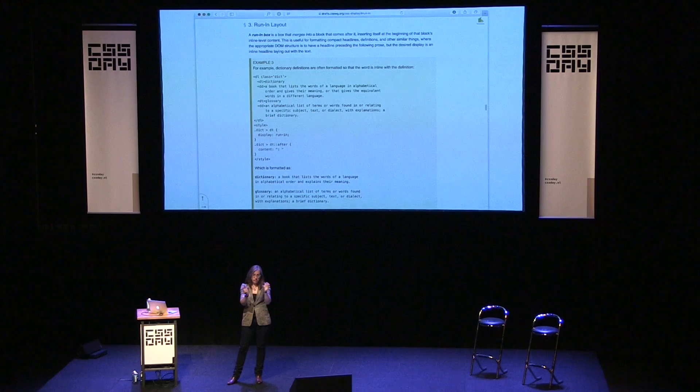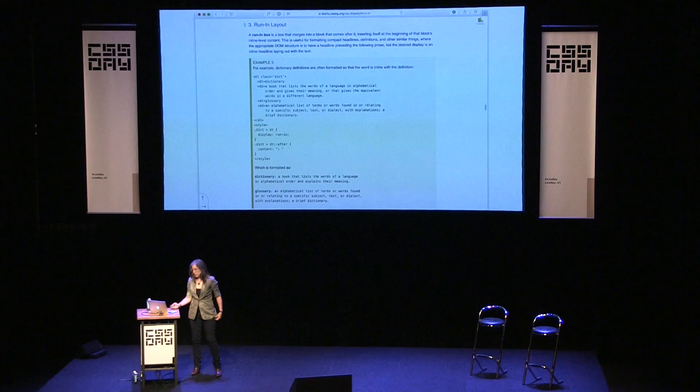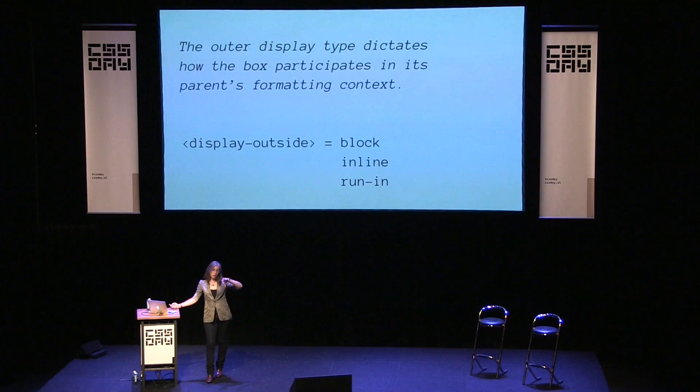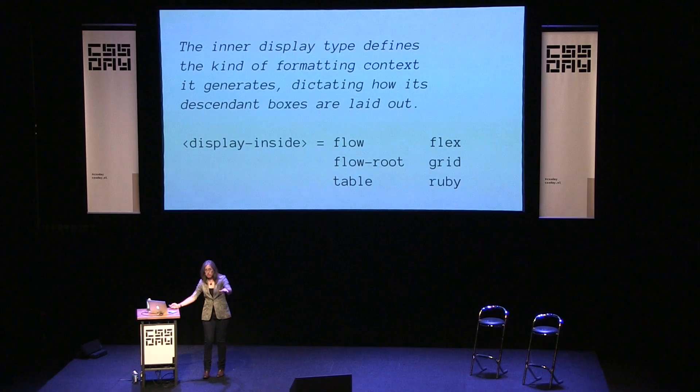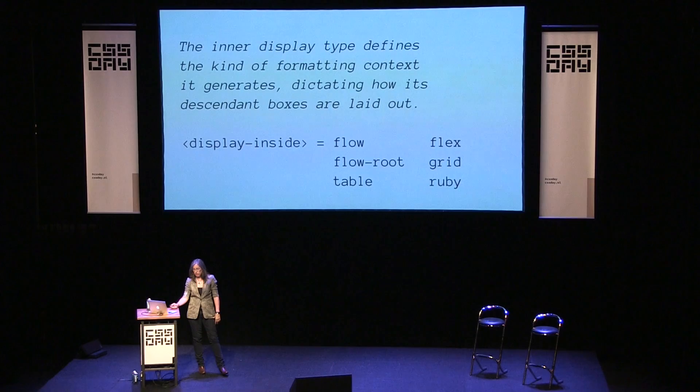So display block and display inline are our two options for how an element participates in its parent's formatting context. The display inside is about what's happening on the inside of the element — the layout mode inside. The options today are: flow, flow-root (which is pretty awesome), table, flex, Ruby, and grid. You could put those two things together, and this is where the mental model really began to shift for me. Instead of thinking of it as just 'block,' it's 'block and flow' — the outer context is block, but the inner one is regular flow of content.